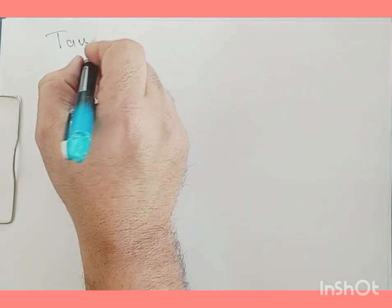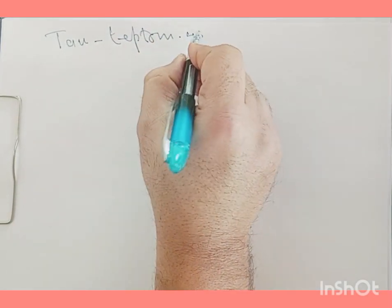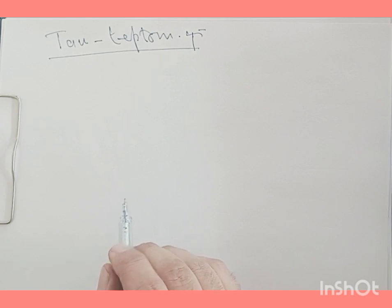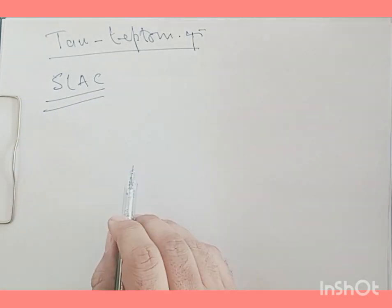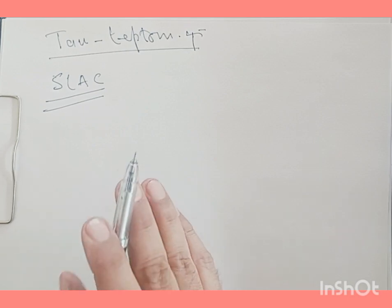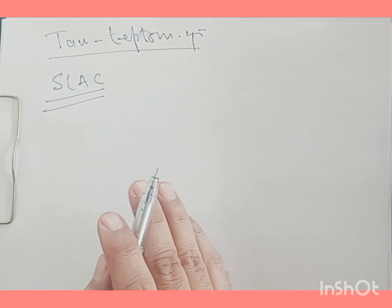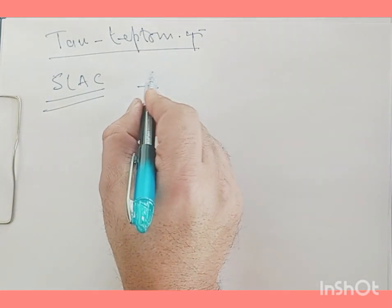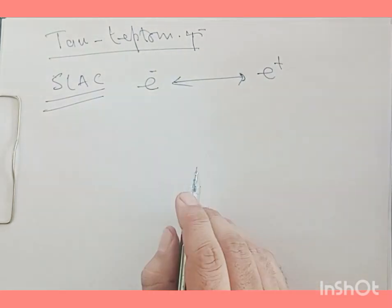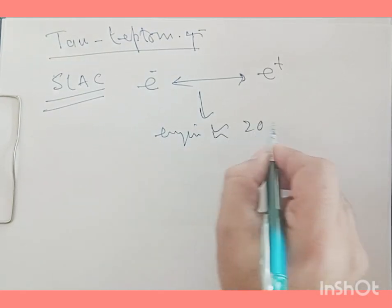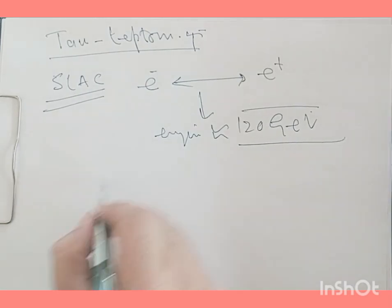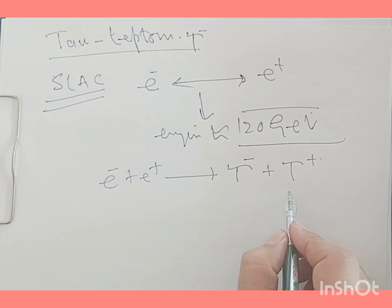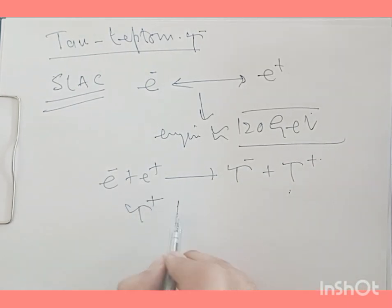Now let's go with tau leptons, with the symbol τ⁻. The tau lepton was discovered in 1975 at Stanford Linear Accelerator Center (SLAC) by Martin L. Perl and his associates, for which they were awarded the Nobel Prize. Tau leptons are produced in electron-positron collisions at very high energies of the order of 20 GeV, in the reaction: e⁻ + e⁺ → τ⁻ + τ⁺.